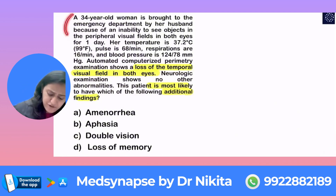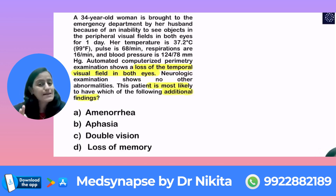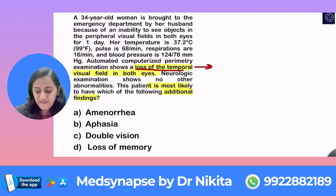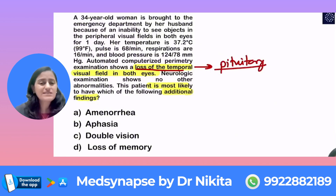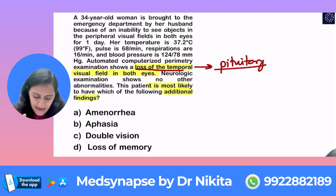Because if you try reading from the first line, generally the first two lines are distractors and they are time-wasters. So you should always read the question in reverse to save time. Loss of temporal field — when I see this, it rings a bell that this is something related to a sellar or suprasellar lesion, that is some pituitary lesion.